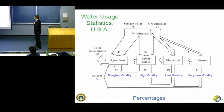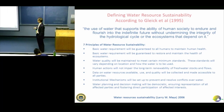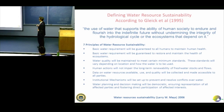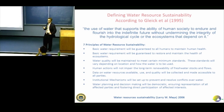Thinking about water from a global perspective, that's where Gleick's seven principles of water resource sustainability come in. Basically, water requirements will be guaranteed to all humans to maintain human health, and to restore and maintain the health of ecosystems. Water quality will be maintained to meet certain minimum standards, which vary based on location and how the water is used — think about the needs a lawn has for water quality versus drinking water. In the U.S. we mostly treat the quality standards as if they're the same.